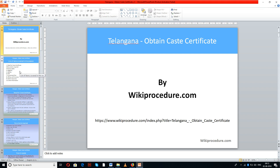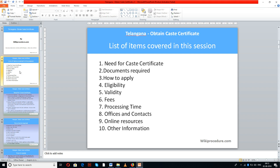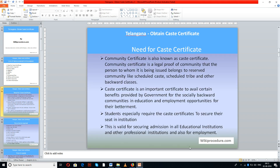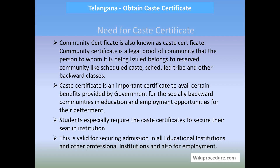A list of items covered in this session: need for caste certificate, documents required, how to apply, eligibility, validity, fees, processing time, offices and contacts, online resources, and other information. Today this presentation is sponsored by wikiprocedure.com.